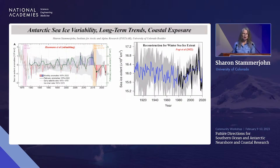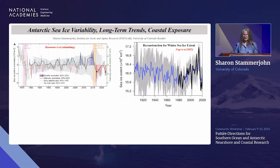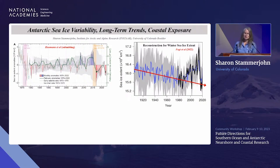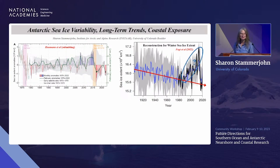We can put this into a longer-term perspective with a recently available reconstruction — an observational-based reconstruction by Ryan Fogt and colleagues — which shows beyond the satellite record. What's remarkable is the underlying trend, somewhat consistent with what global climate models were suggesting, though with a lot of uncertainty. This is a pretty robust observationally-based reconstruction of winter sea ice extent, and this now six-to-seven-year period of record low sea ice is kind of in line with that long-term trend.